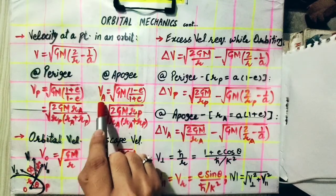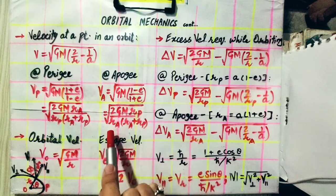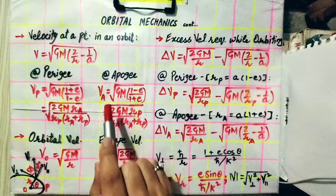Velocity at apogee in terms of eccentricity is under root GM into 1 minus e upon 1 plus e. And in terms of radiuses at perigee and apogee are 2GM rp upon ra multiplied by ra plus rp, all under root.